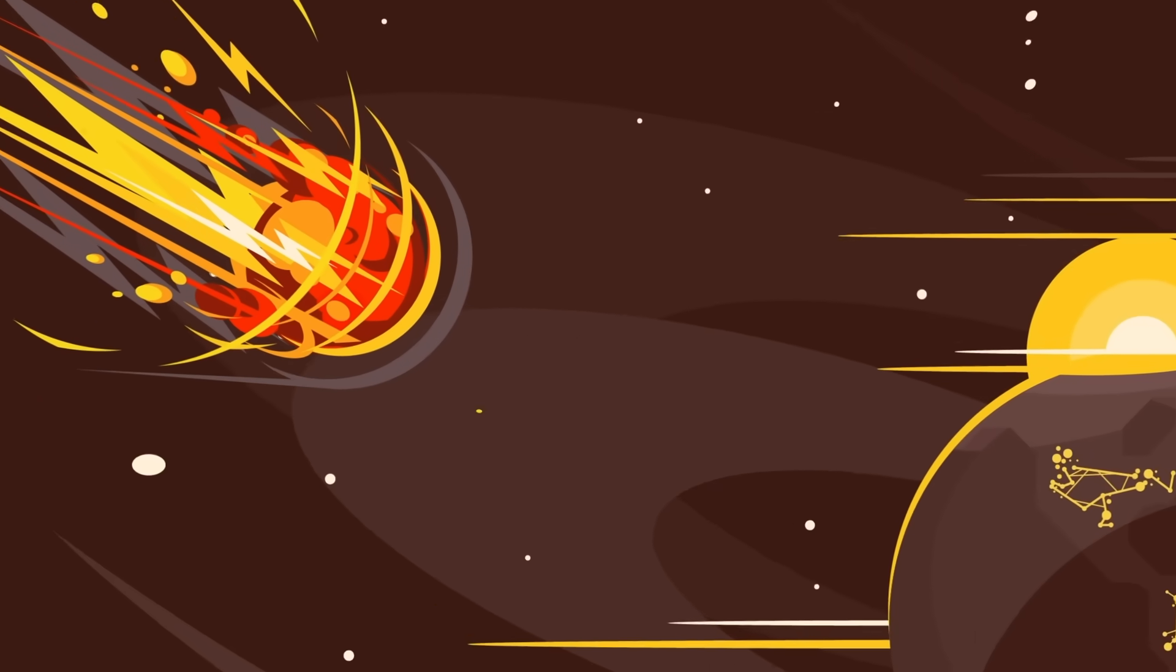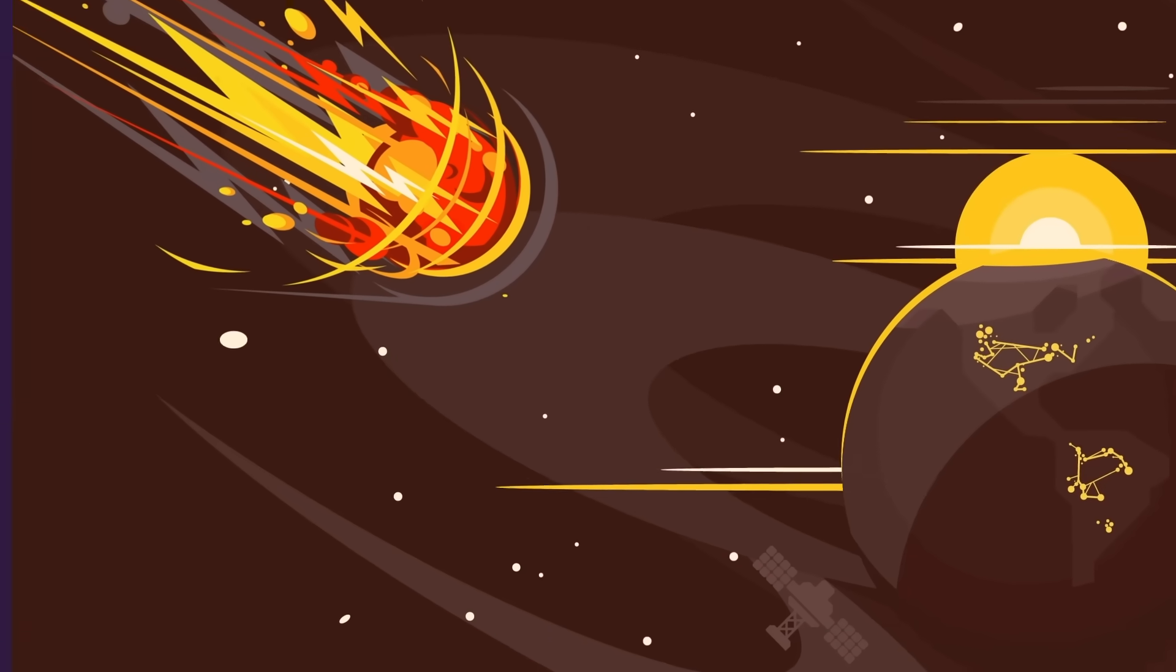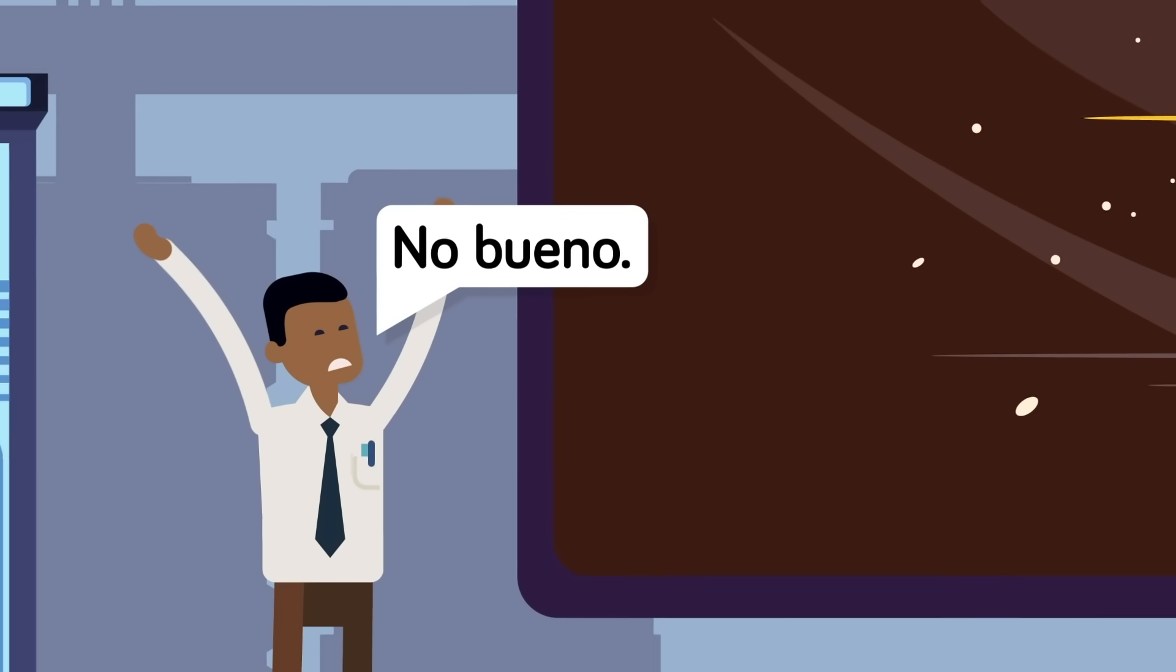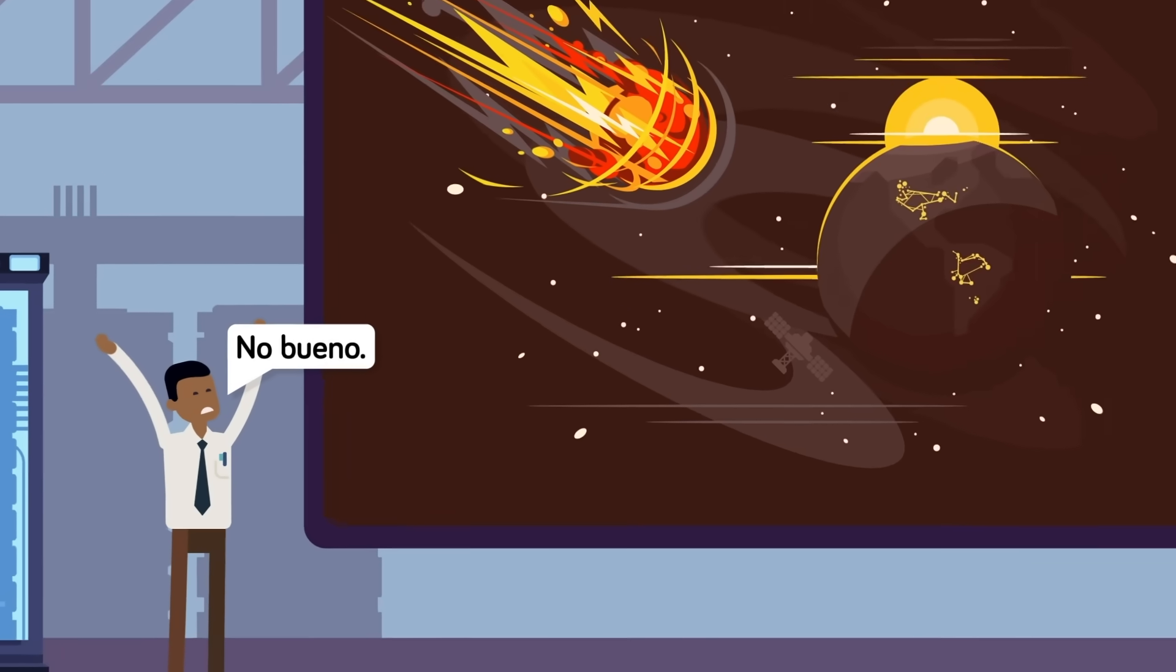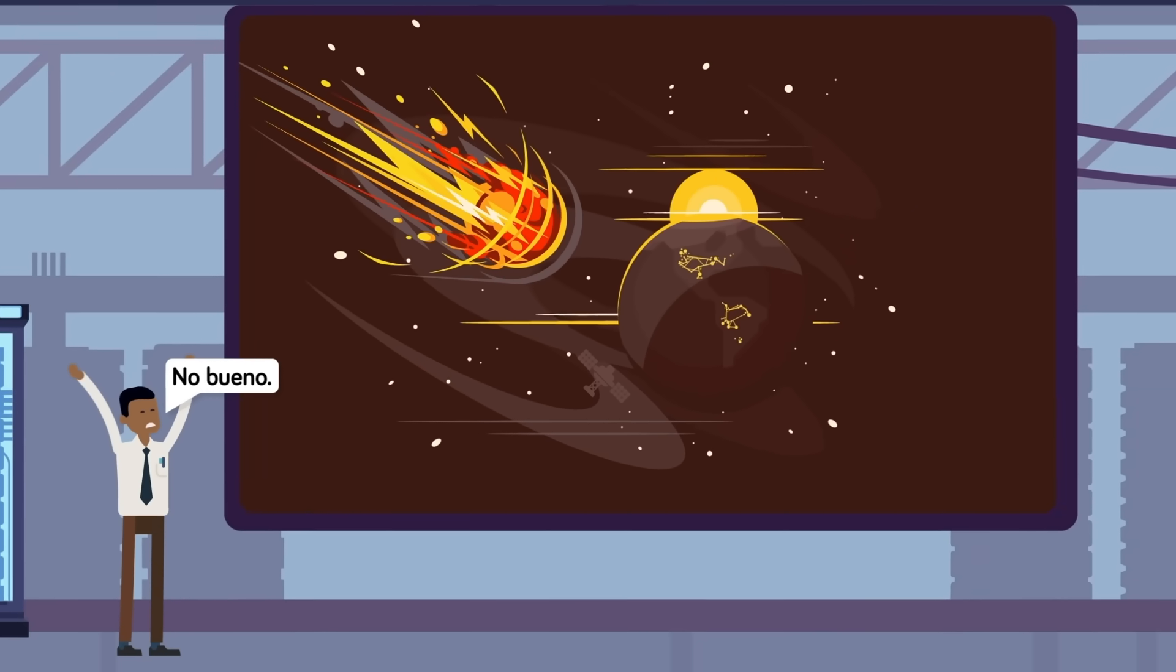And what happens if this chunk of dark matter happens to have its own orbit, inevitably perturbed and sent on a collision course with the solar system, or the sun itself. The results could be catastrophic.